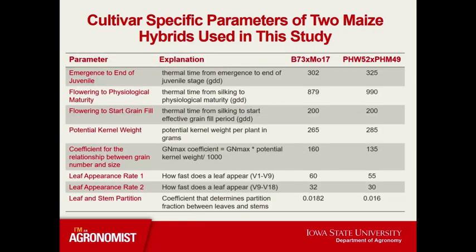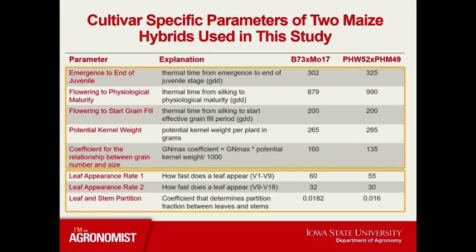This highlights some of those parameters and gives corresponding values for two of the 12 hybrids. In APSIM's maize model, there are approximately 100 maize parameters, and 10% are deemed hybrid-specific. When starting my calibration process, I first focused on these parameters, which are primarily phenological. For instance, flowering to physiological maturity is the thermal time from silking to physiological maturity — for B73 by MO17 this was 879, and for PHW52 by PHM49 it was 990. I then moved on to other parameters and made them hybrid-specific, such as leaf appearance rate and the partitioning between leaf and stem.